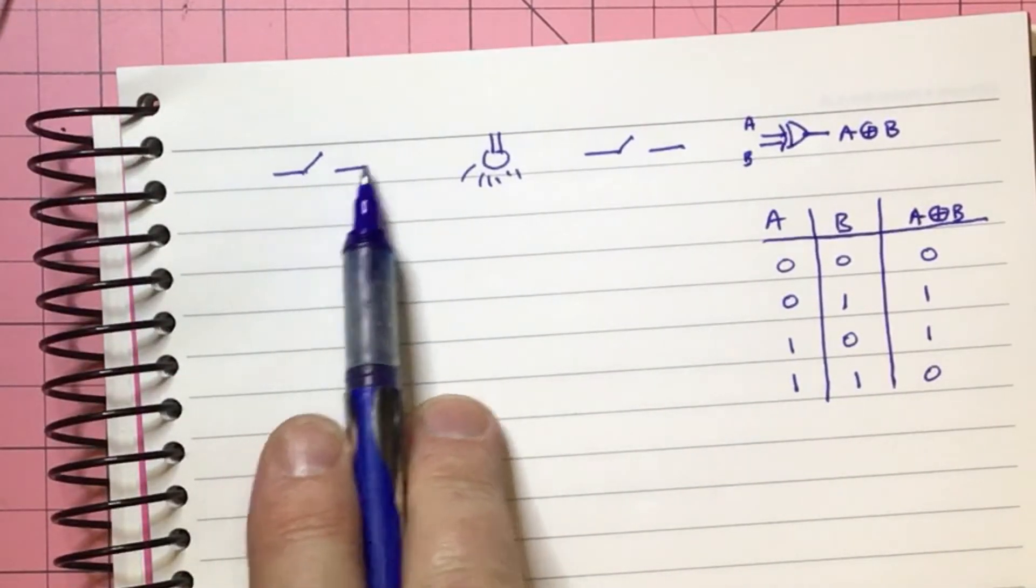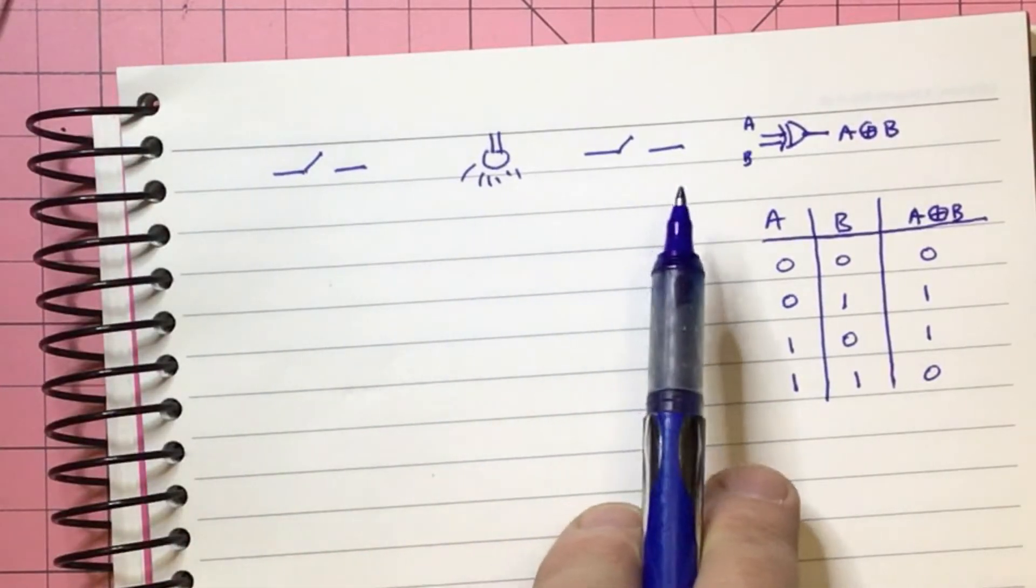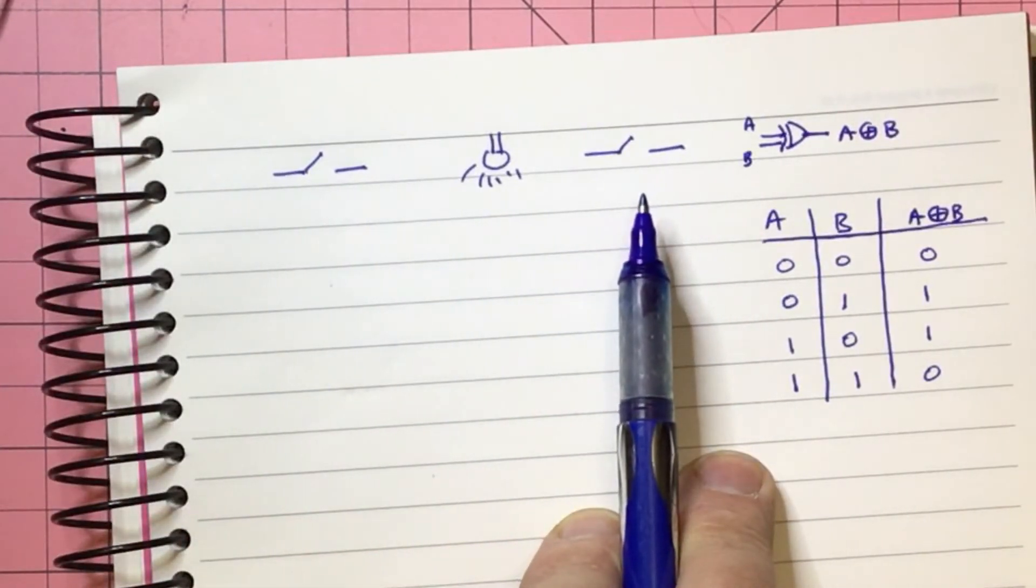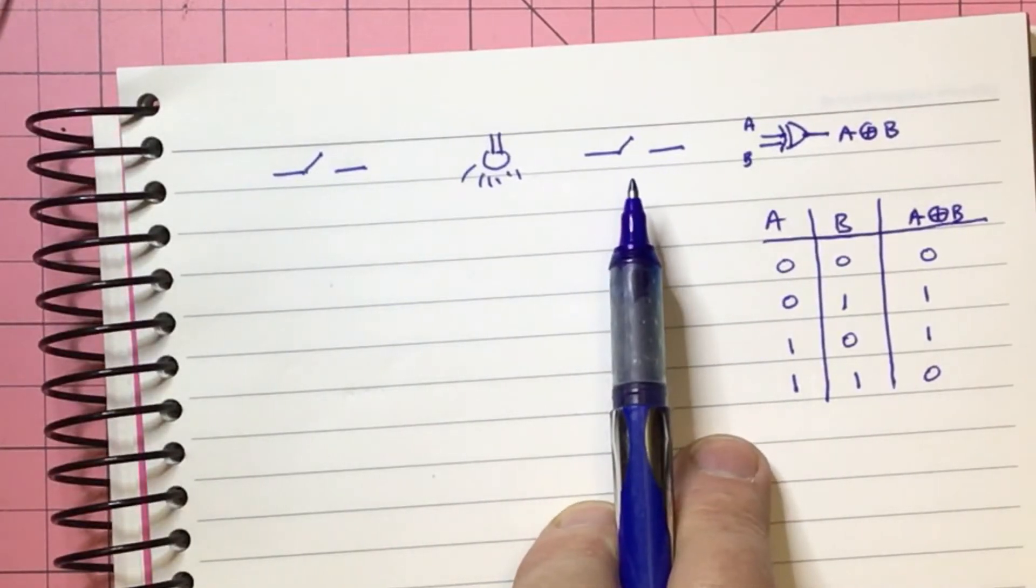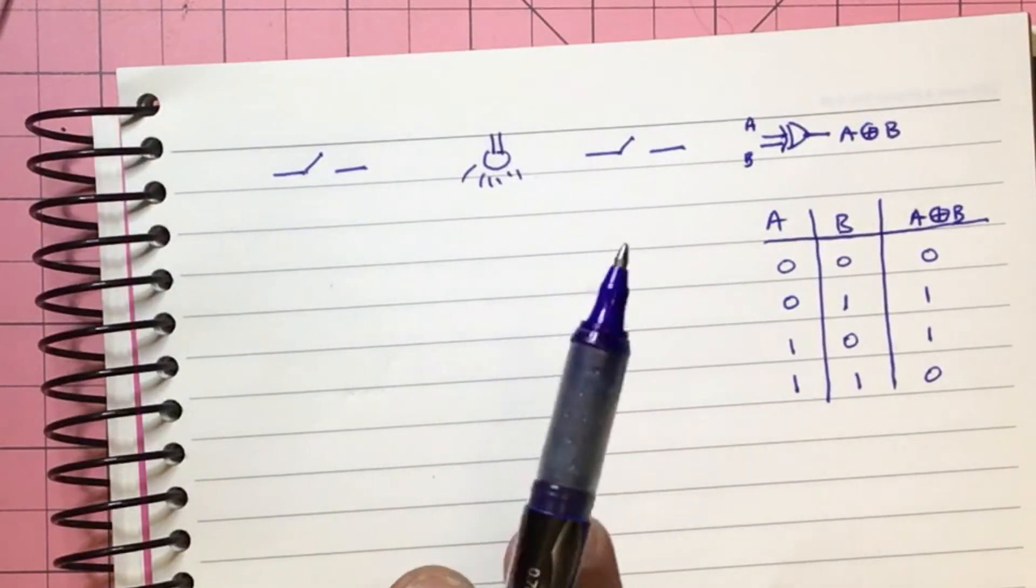You come in, you switch the light, it doesn't matter which position it's in, and if the light was off, it's on. Perfect. You go over to the bed, jump in the bed, you figure it's time to turn the light off, and no matter what position this switch is in, you switch it and the light goes off. So that's what we want.